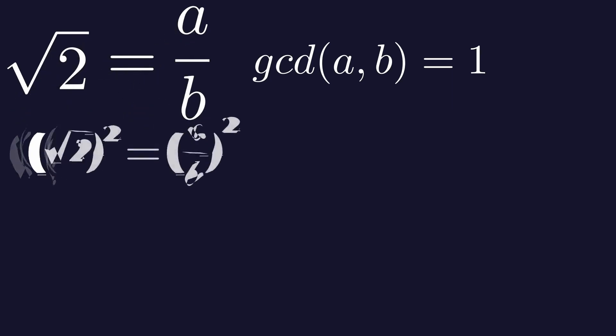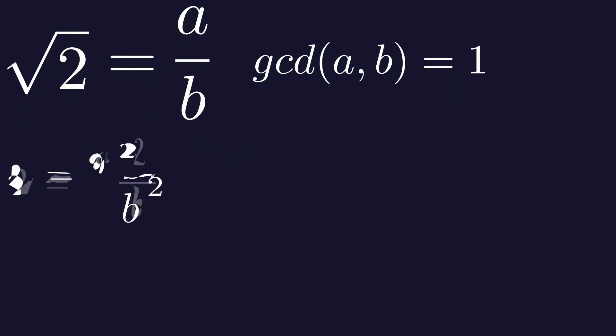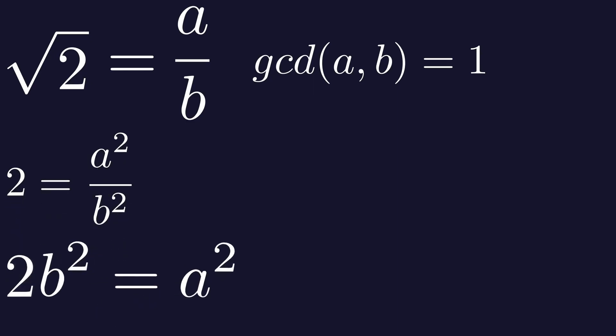Now let's square both sides of the equation. So 2 equals a squared over b squared. Now we can multiply both sides by b squared, and we have 2b squared equals a squared.